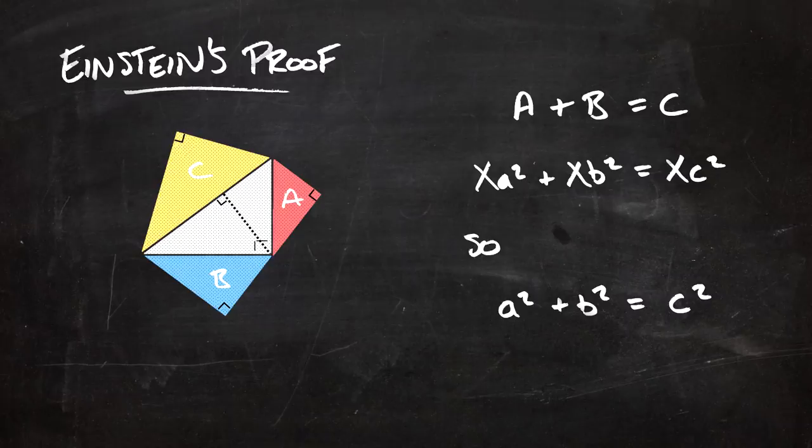And that is a proof of the Pythagorean theorem — and it's such a neat idea. Instead of showing that when Pythagoras' theorem is true the areas must be equal, in this case if the areas are equal then Pythagoras' theorem must be true. And if you have been, thanks for watching.